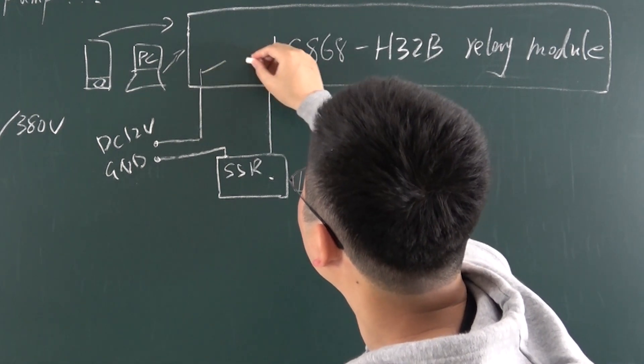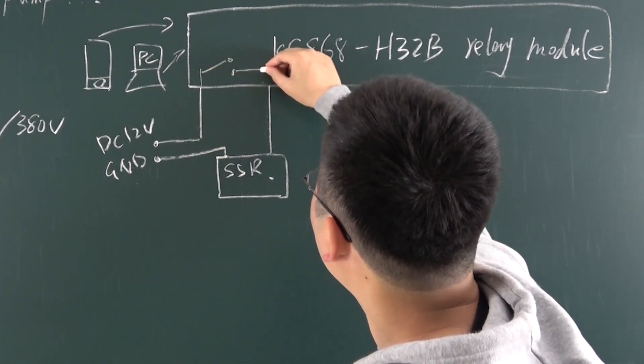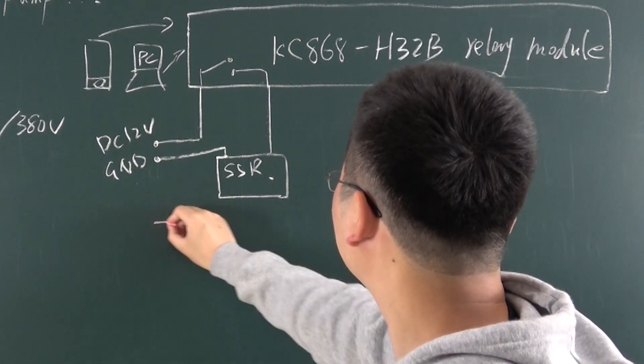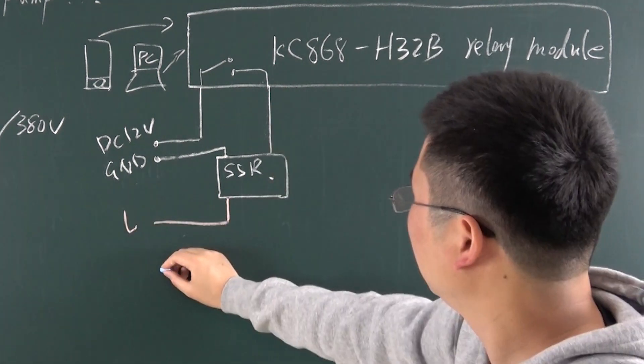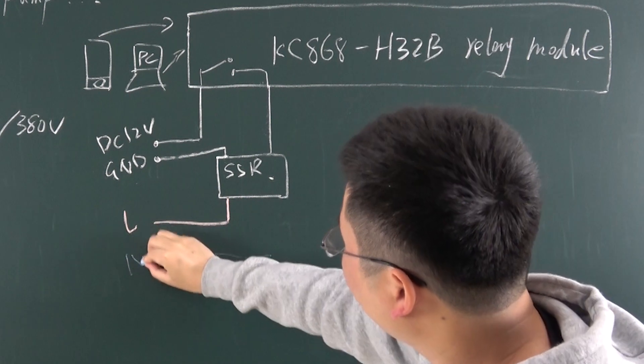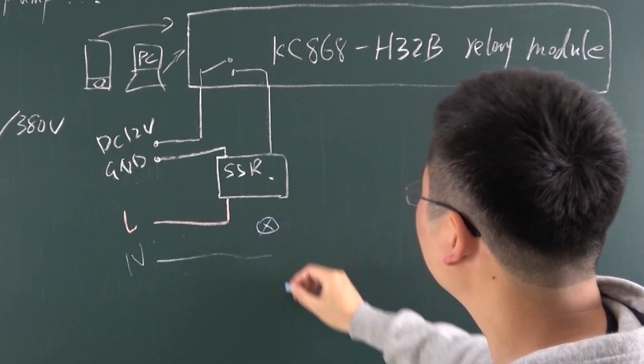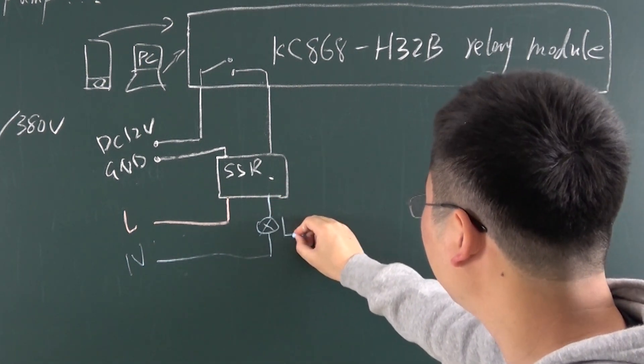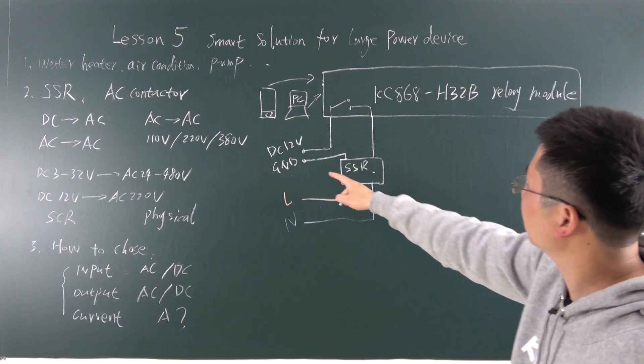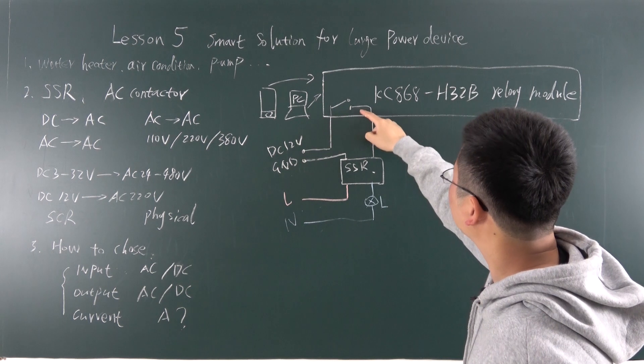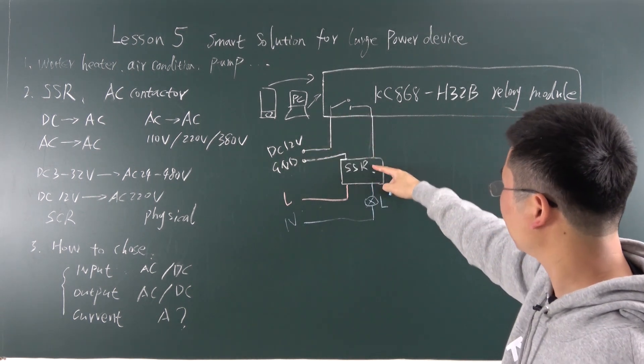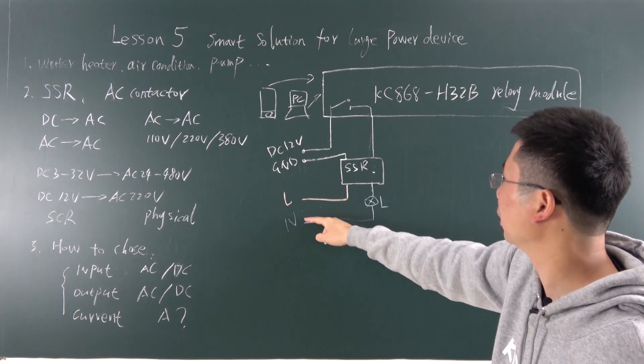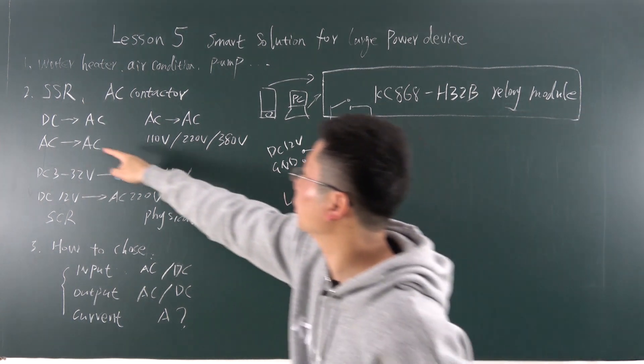This is inside is a relay. So you can control the lamp. This is L. And this is neutral N. And we'll have a load in this position. It's a load. So this is input, the 12 voltage. When the 12 voltage gives the SSR. So the L will go through the load. Go to the N. And this is the first one. This type.